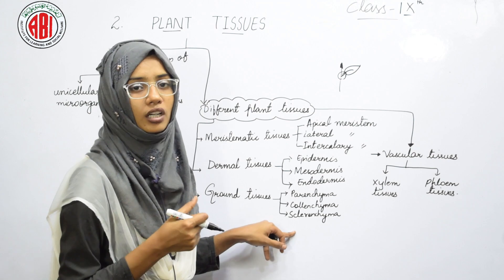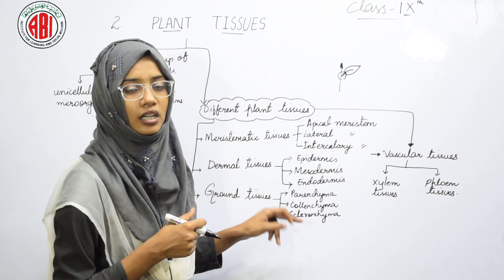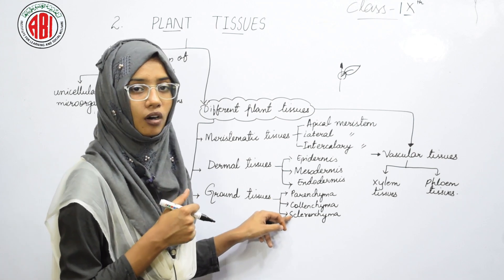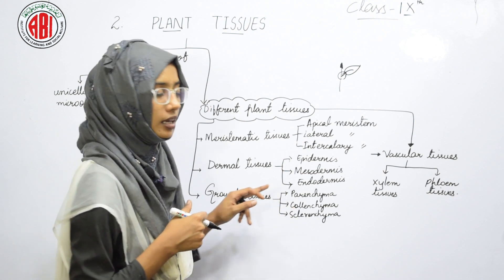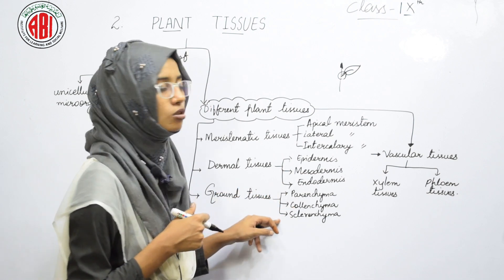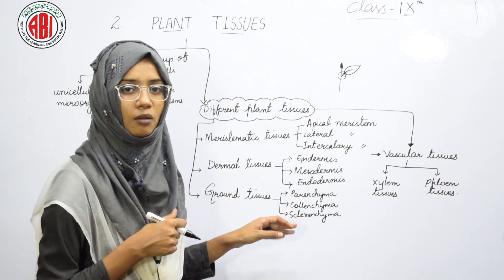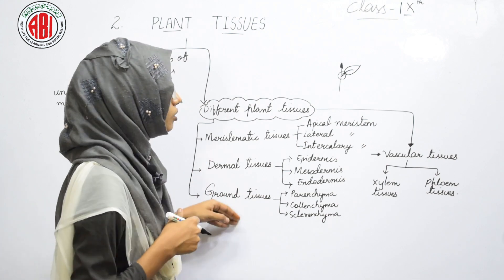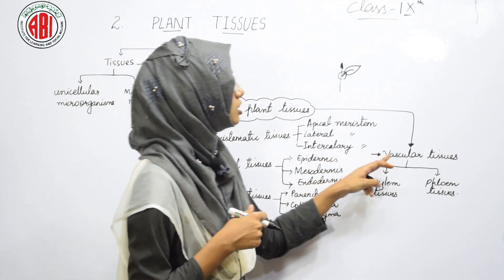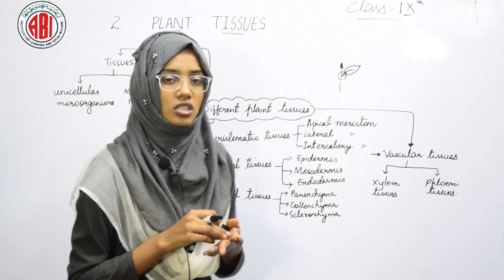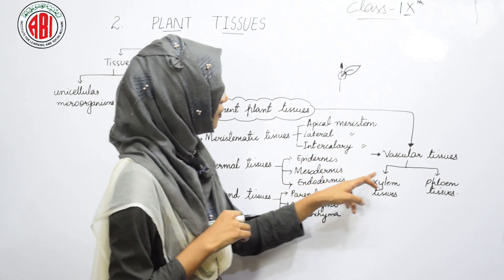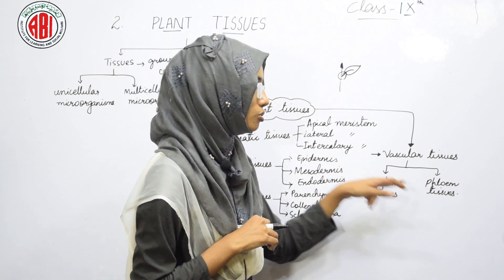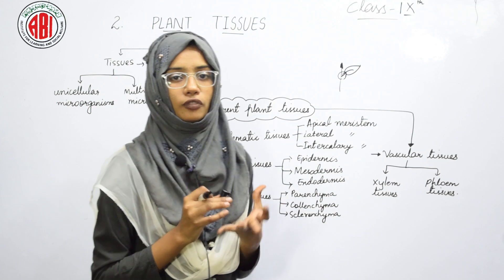Colenchyma cells are thick-walled compared to parenchyma and more elongated. Sclerenchymatous tissues are always present in the hard parts of the plant, forming the hard woody trunk. These tissues are very thick-walled, do not show any intercellular spaces, and are compactly arranged. The last tissue type is vascular tissues.